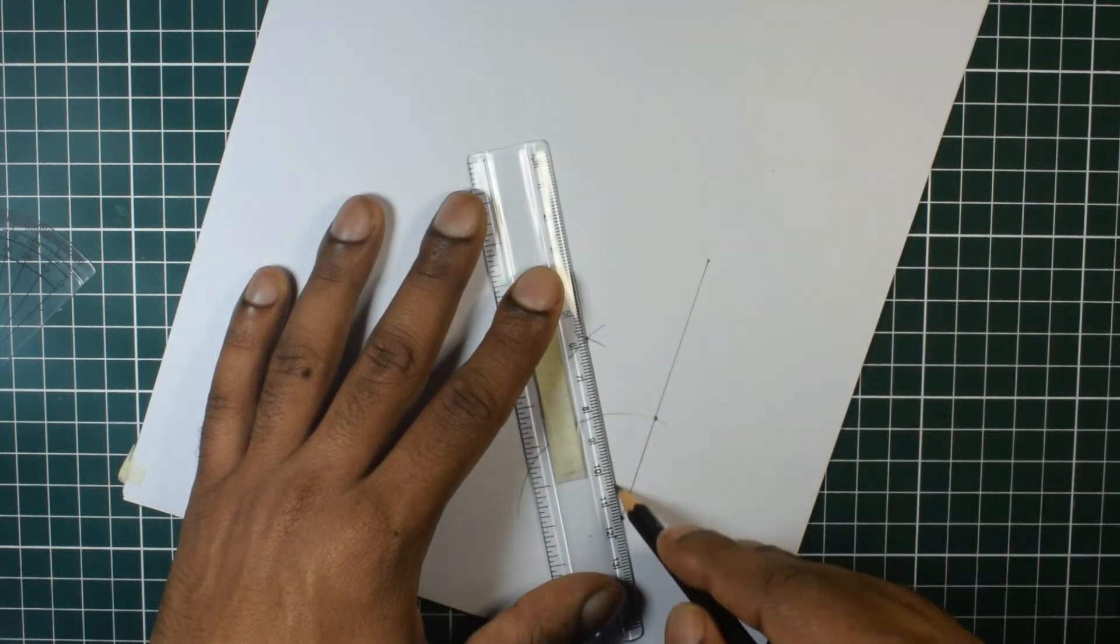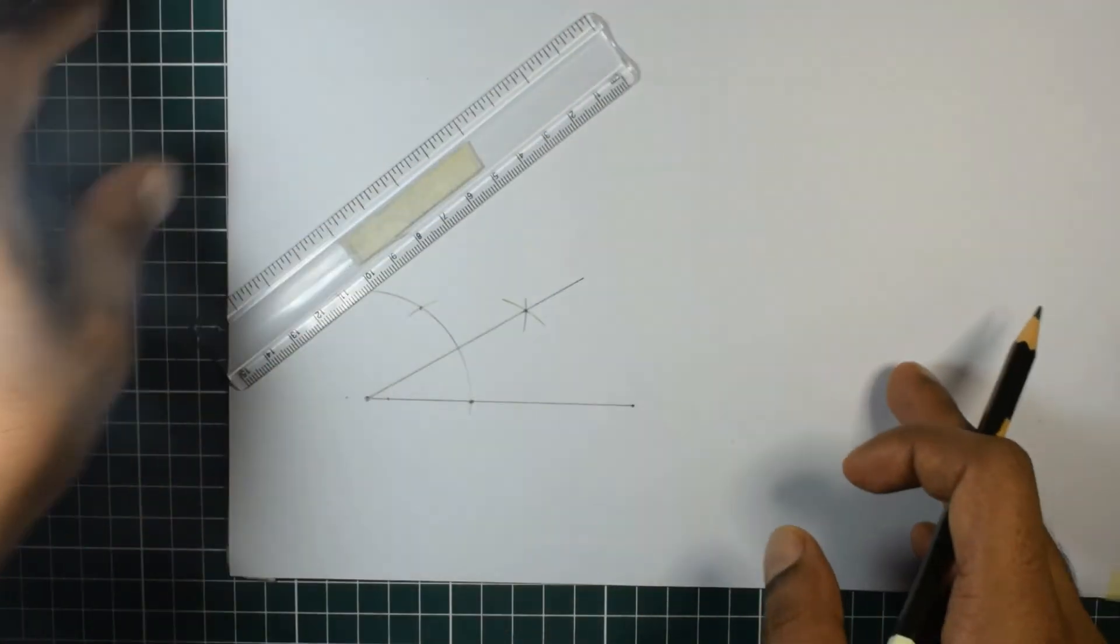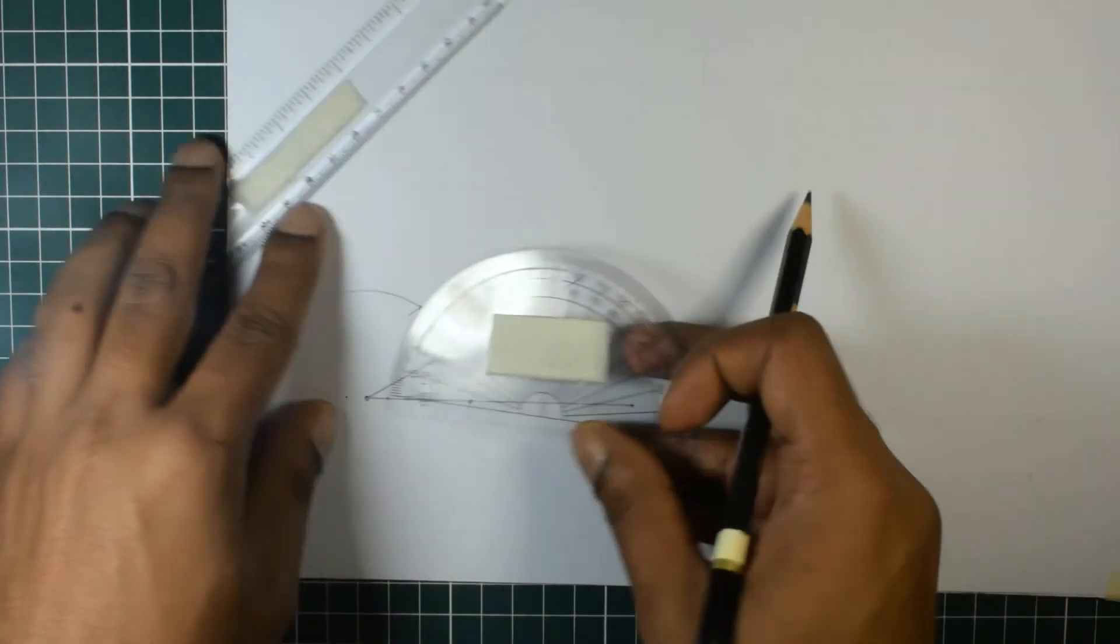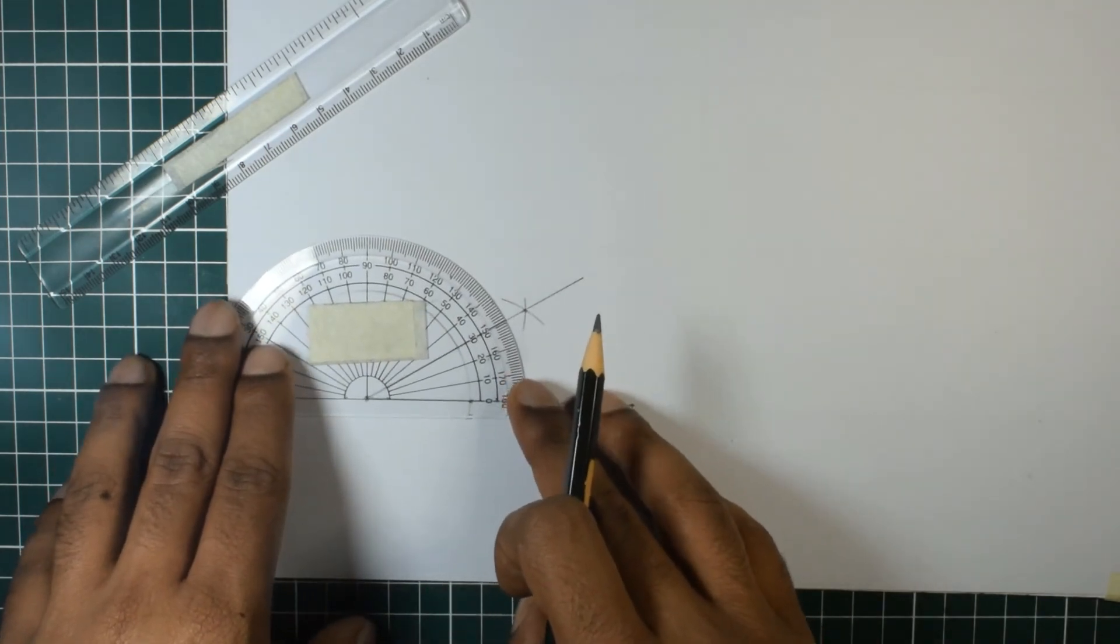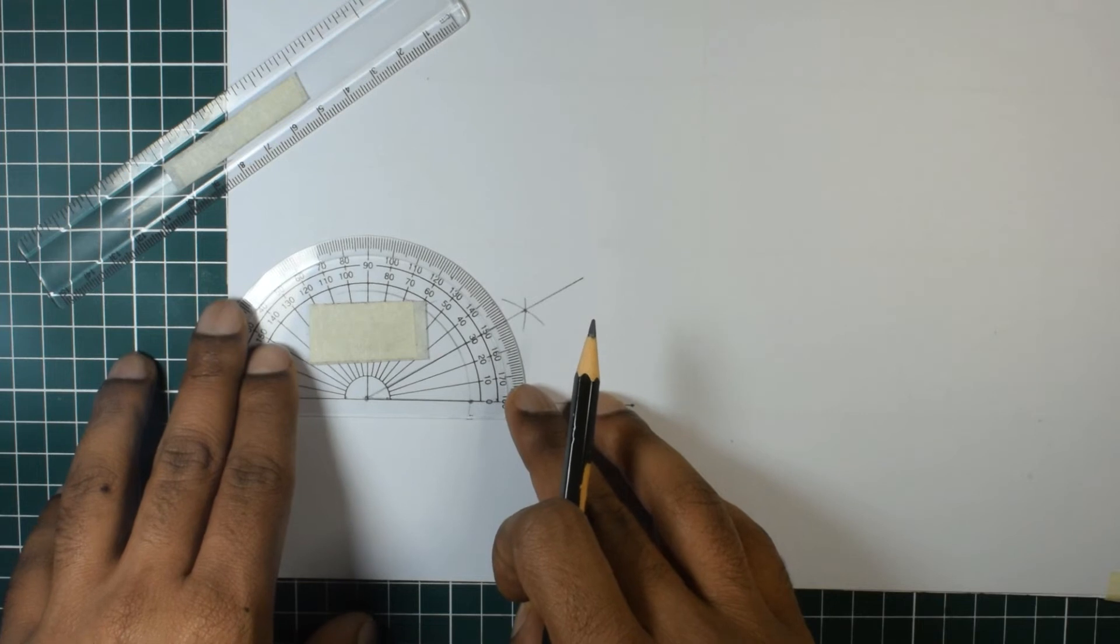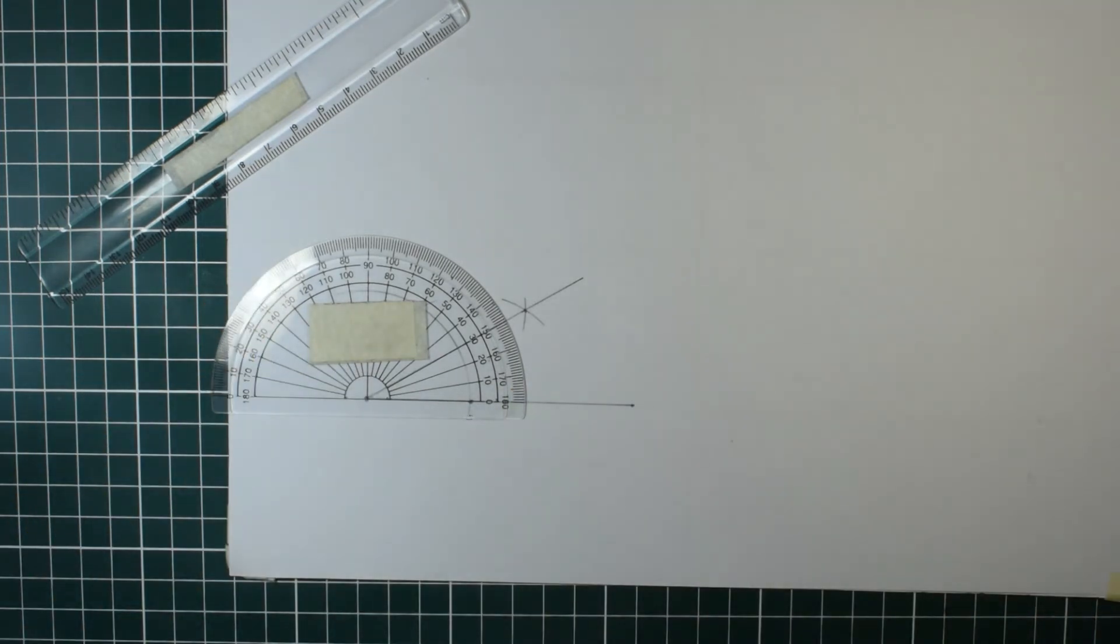The logic is also quite simple. As you can see clearly, that is 30 degrees. Please understand with logic, then it becomes very simple.